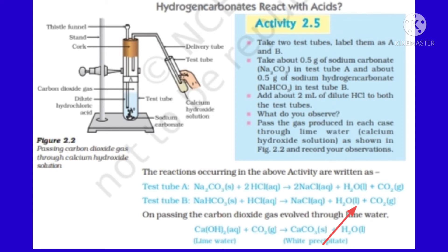In Activity 2.5, we are going to do metal reaction with the carbonate salt. Here the salt is Na2CO3, sodium carbonate, and the acid is hydrochloric acid. On reacting, I told you carbonate with acid, three products you would get. First one is salt.